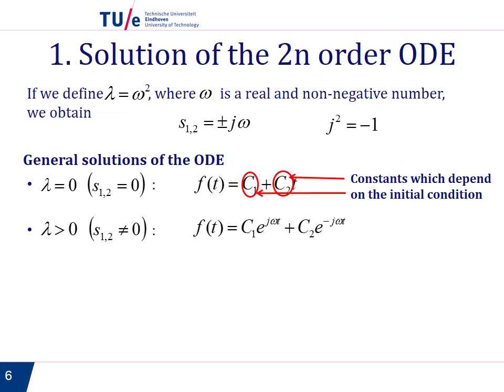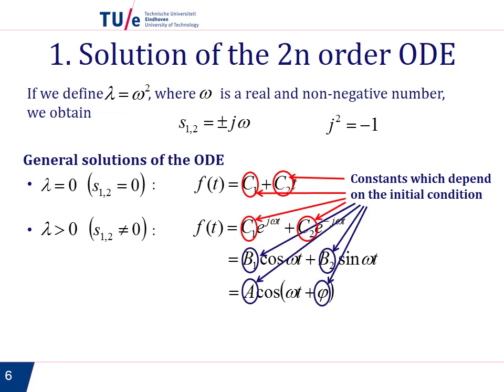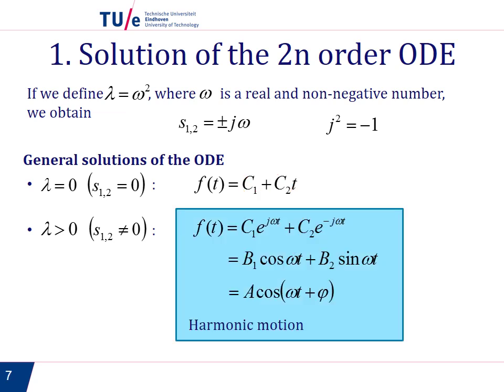The other option is that λ > 0, and then f can take the form c₁e^(jωt) + c₂e^(-jωt). This is a harmonic function, so we can write it in different representations, and all these constants depend on the initial conditions. These functions are different representations of harmonic motion.